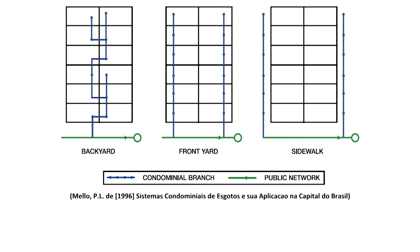The middle design in this slide shows the condominial branch going through the front yards of the houses. The design on the right panel shows the condominial sewer line laid under the sidewalk in front of the house. Both the front yard and the sidewalk designs use more sewer line than the backyard system, but they still save money compared to traditional sewer systems.